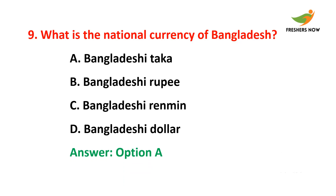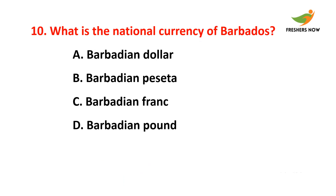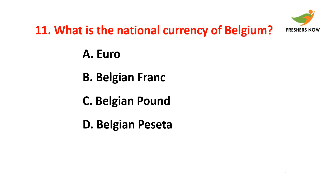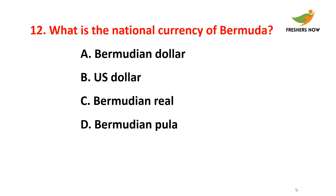Ninth question: What is the national currency of Bangladesh? The answer is option A — Bangladeshi taka. Tenth question: What is the national currency of Barbados? The answer is option A — Barbadian dollar. Eleventh question: What is the national currency of Belgium? The answer is option A — euro.